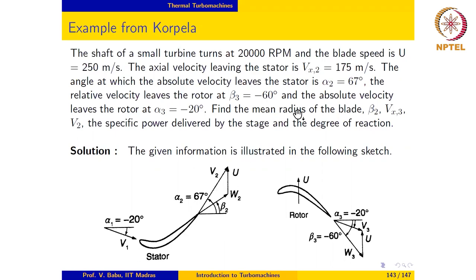We have to be very careful in transferring this information given into a sketch. The sketch is actually shown here. Notice that in this sketch, Professor Korpela has used W for relative velocity as opposed to the C that we are using. Please bear this in mind when you look at the diagram.